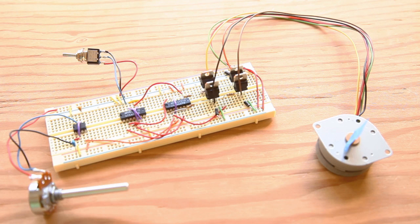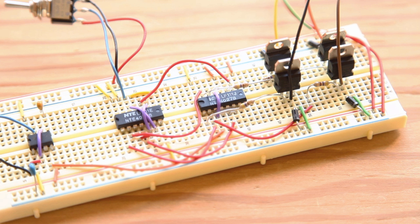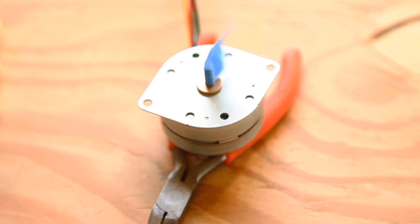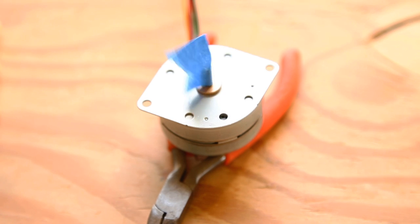Finally, hook the motor coils up to the transistors on the breadboard as shown in the illustration, and connect the common stepper motor connection to the 12 volts. When the transistors are activated, the current will flow from the common line through the motor coil into the ground via the transistor. Now, as you turn the potentiometer, the stepper should follow suit.